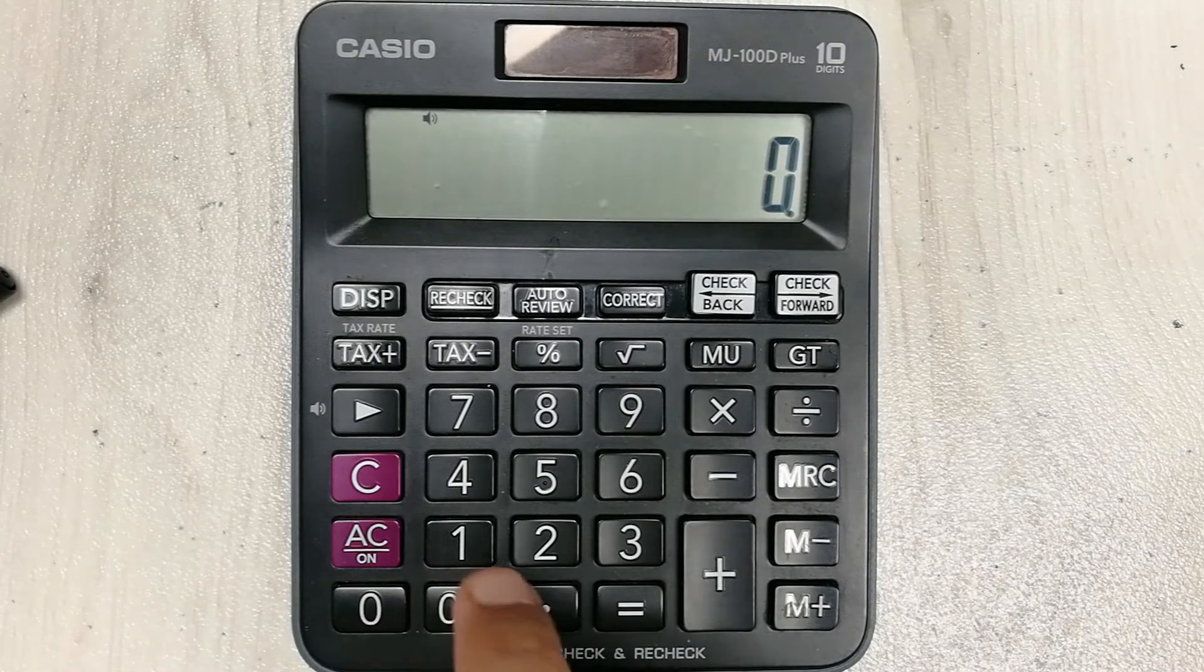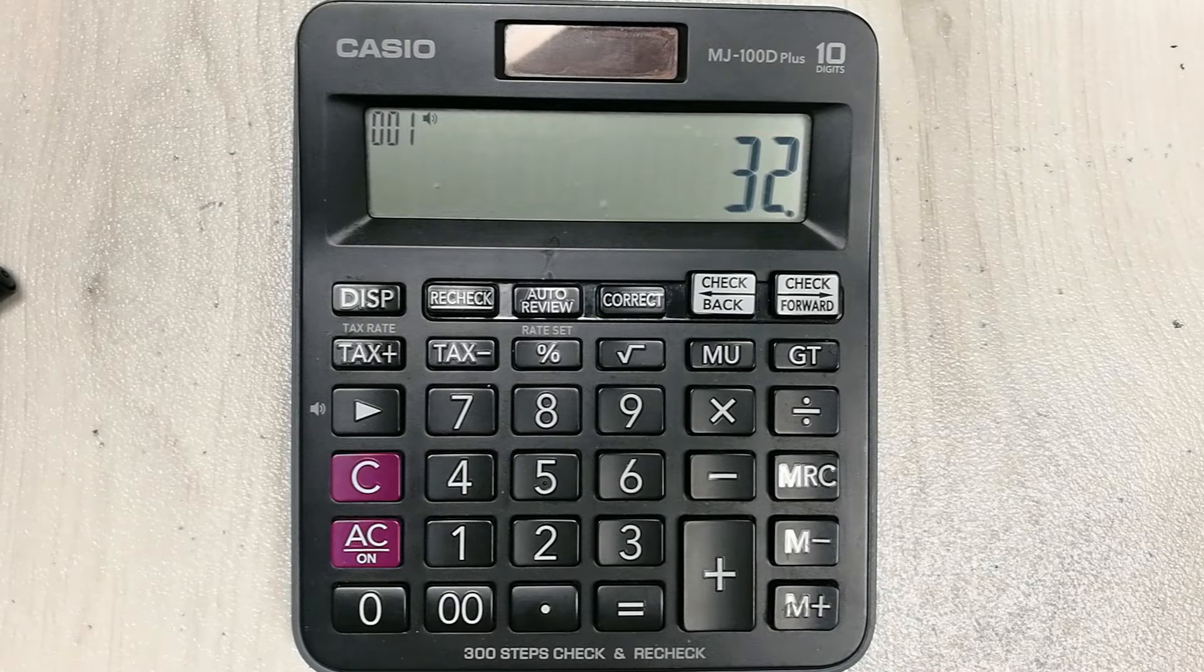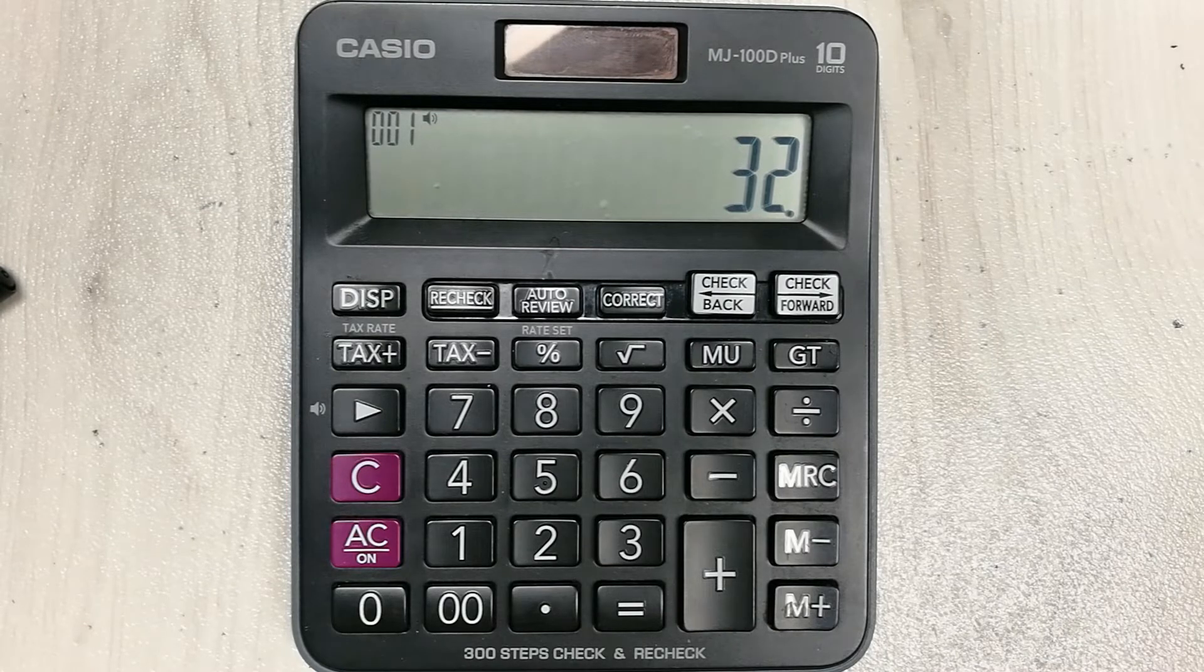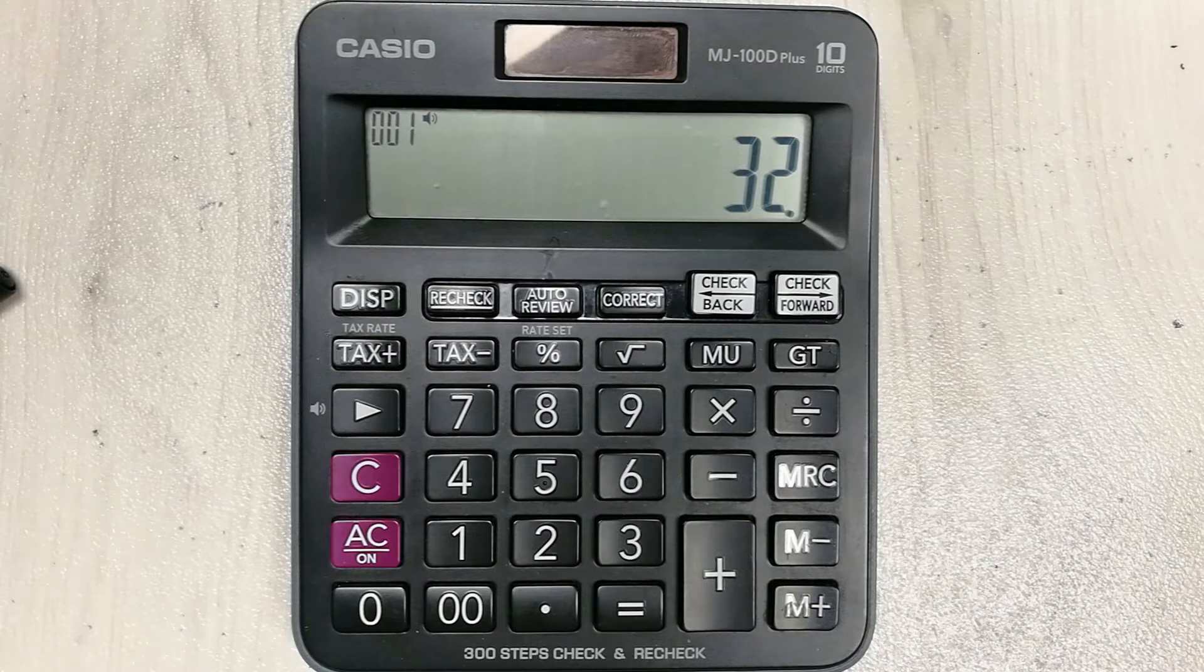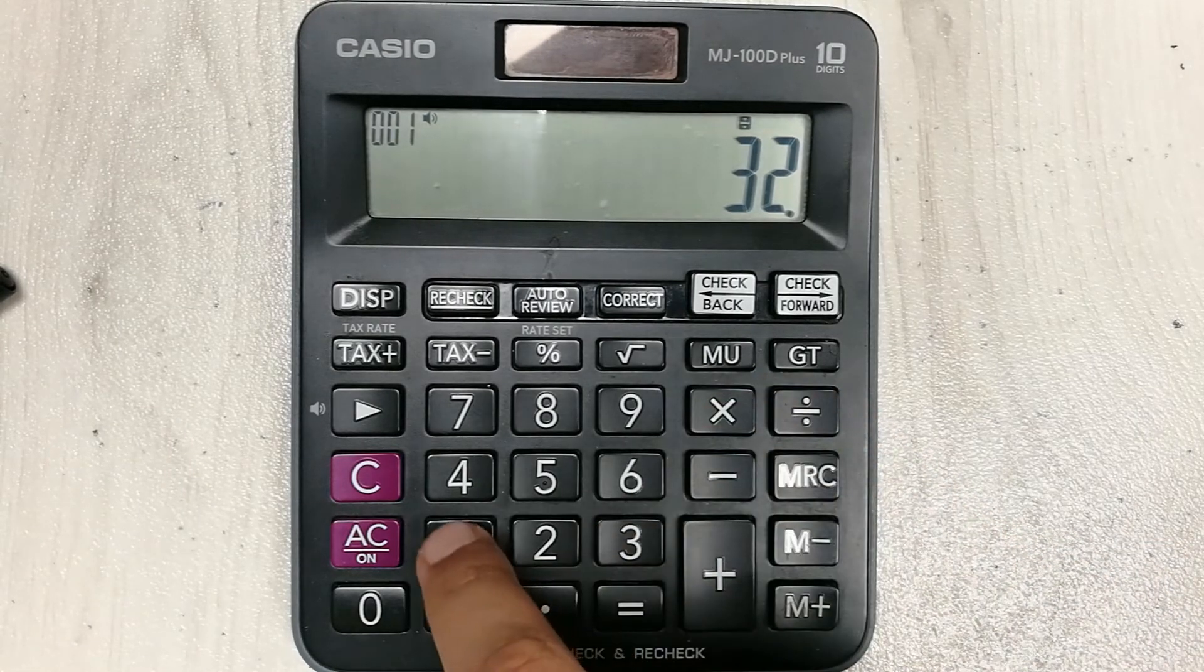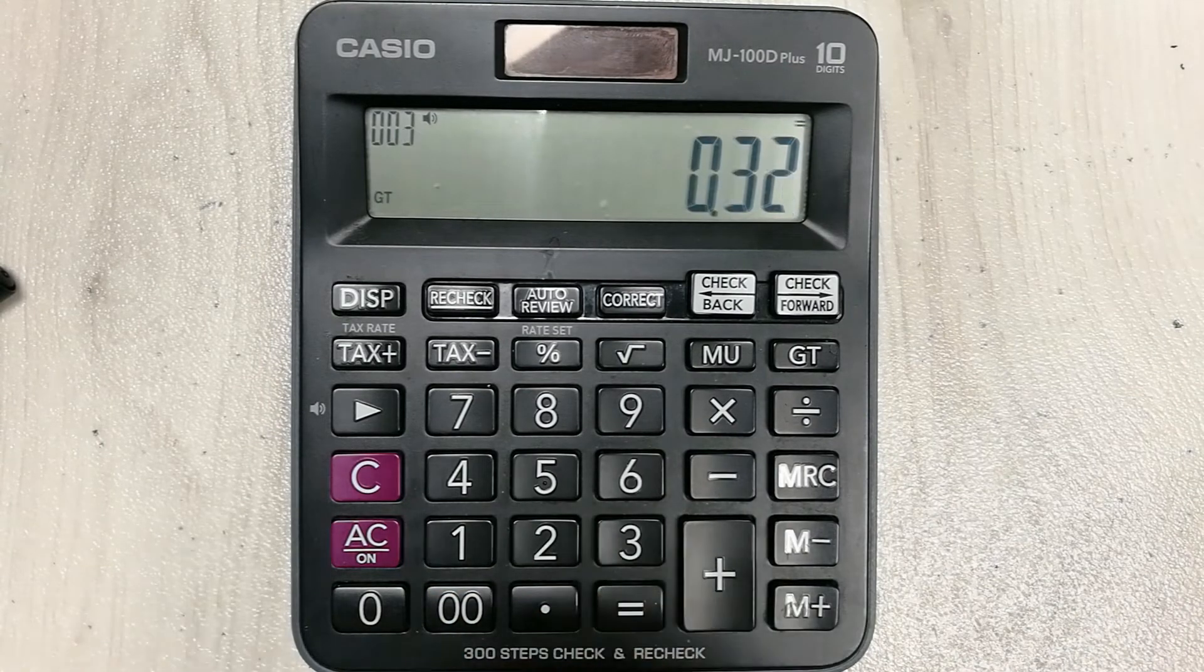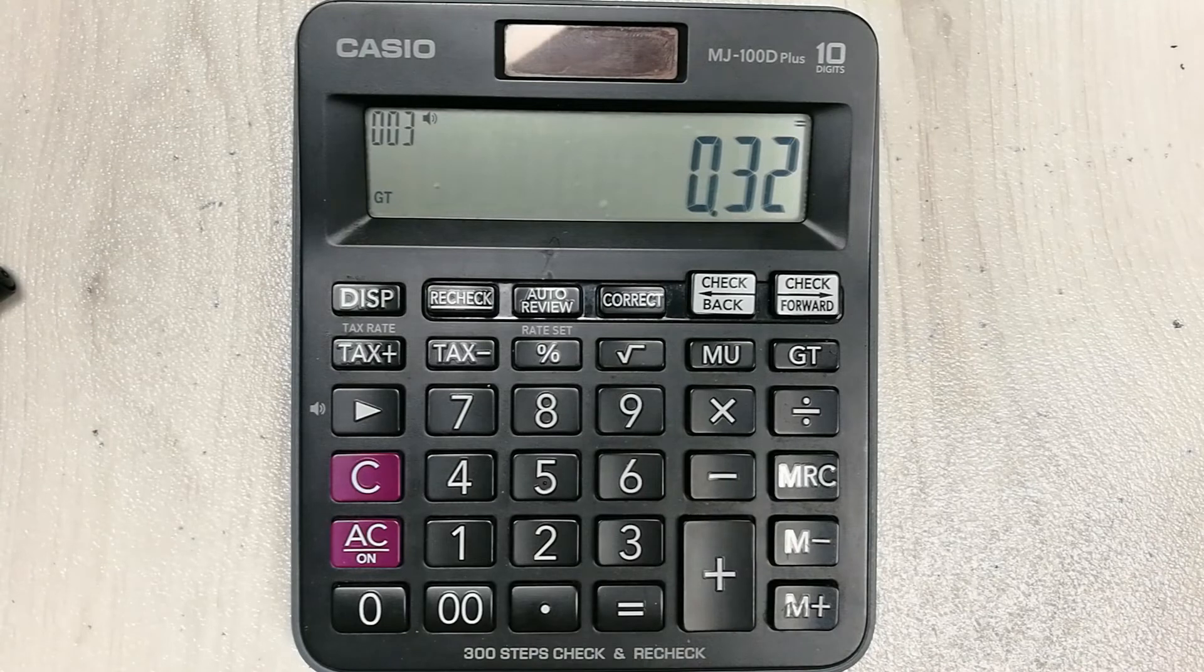Let's say I have one more percentage, 32 percent. You want to convert this 32 percent into a decimal number, a simple number. So 32 percent, you have to divide 32 by 100. Always divide it with 100, and then press the equal button.